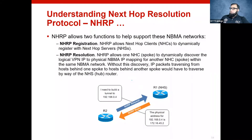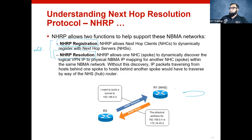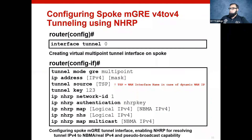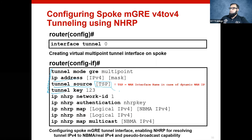So the concept of registration and the concept of resolution - that is where we are overcoming the deficiency of M-GRE's destination IP. We have seen the configuration: we configure tunnel mode GRE multipoint, IP address, source, the key of the tunnel - and you can see the destination is missing. This source can be an IP or the WAN interface name.